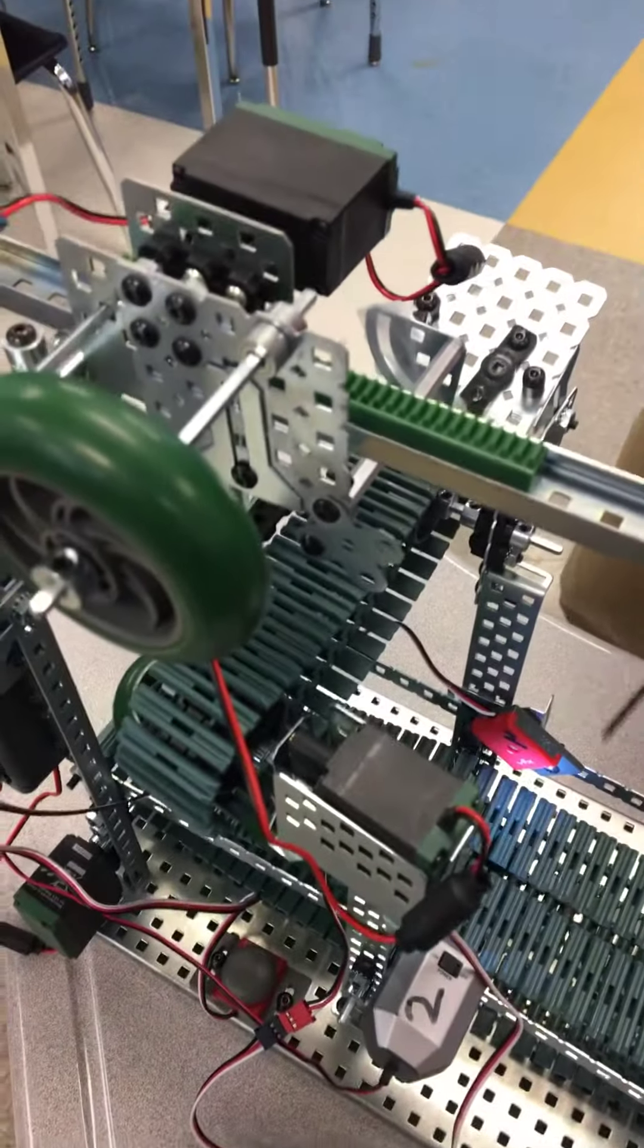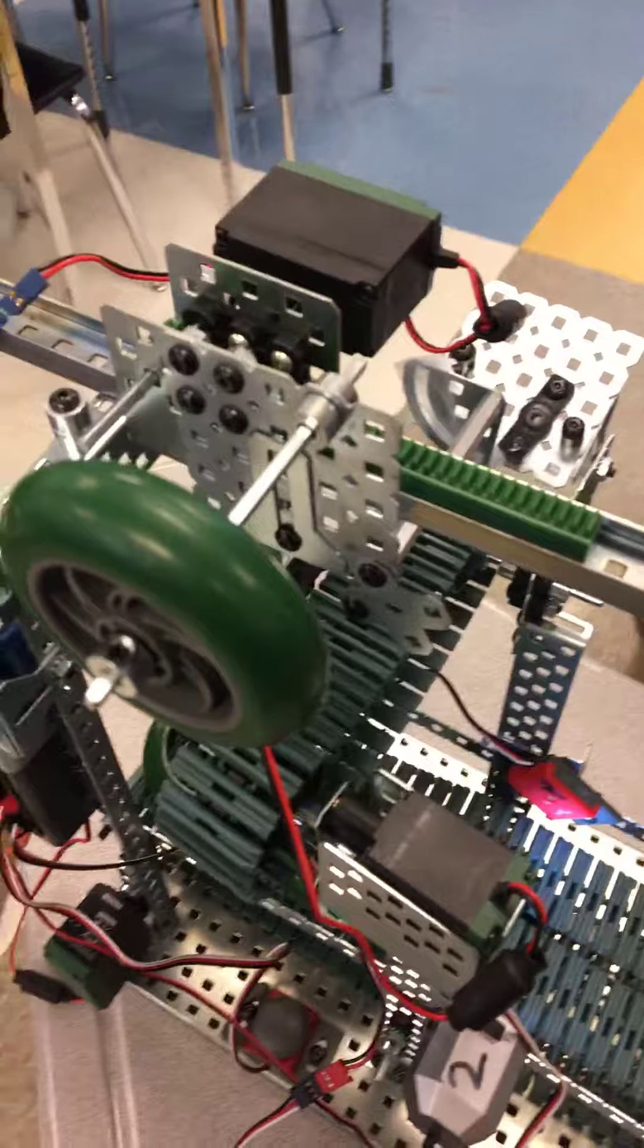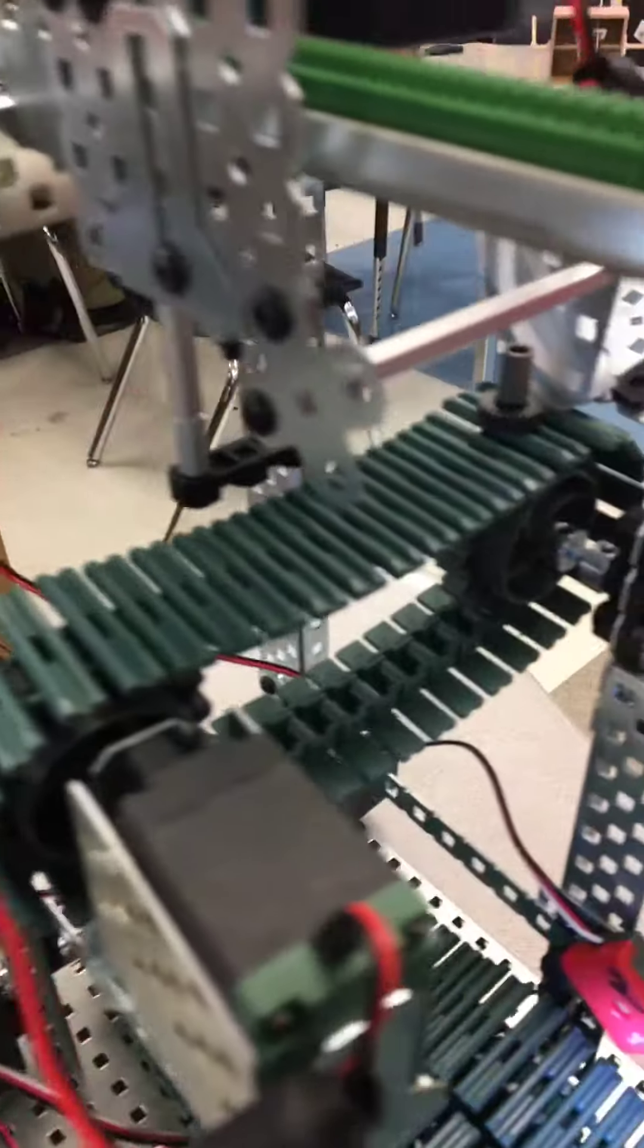This is the light sensor where it picks up the light from the flashlight until a cookie passes by and blocks it with a shadow, which stops the conveyor.